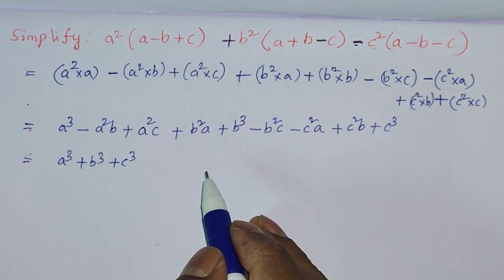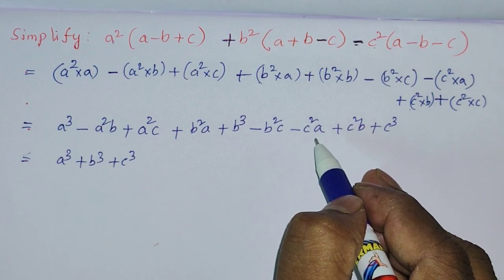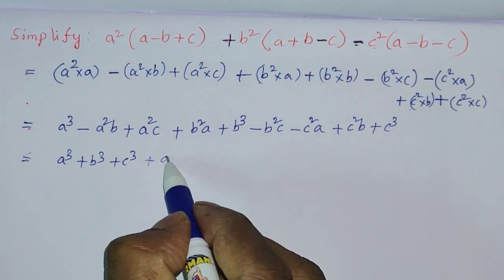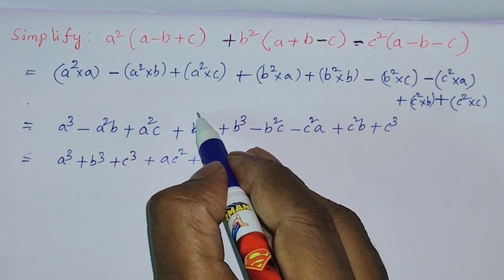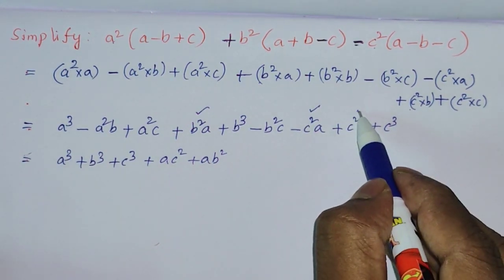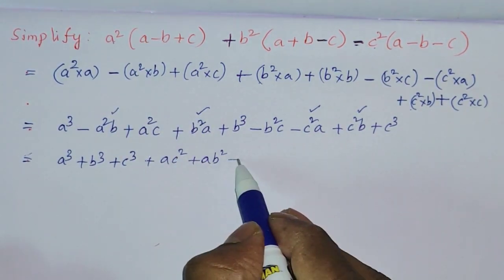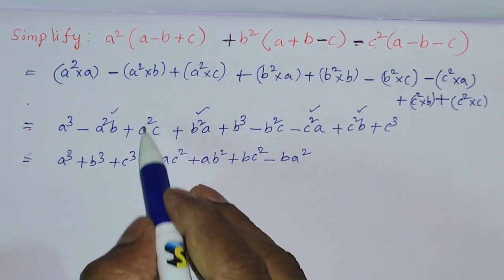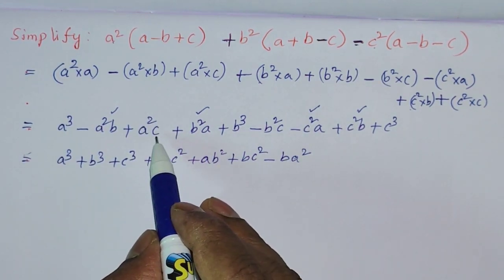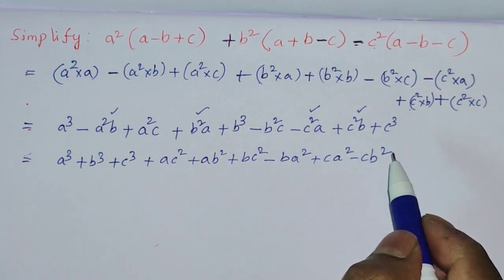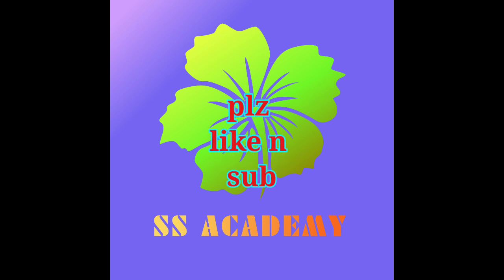Collecting like terms: the cubes are a cubed plus b cubed plus c cubed. For the a-terms: a²c and ab² remain. For the b-terms: bc squared minus b squared. For the remaining terms: plus ca squared minus cb squared. That gives us the simplified result. Thanks for watching my video, please like, subscribe and share. Thank you all, bye bye.